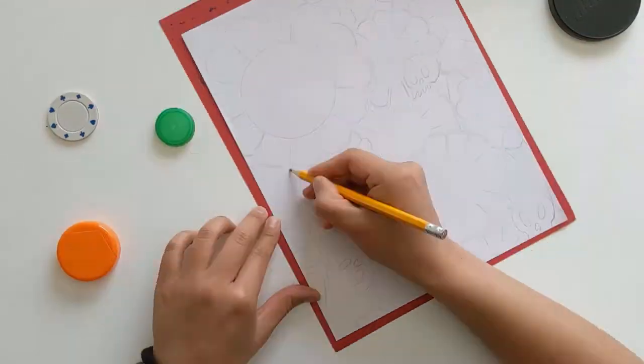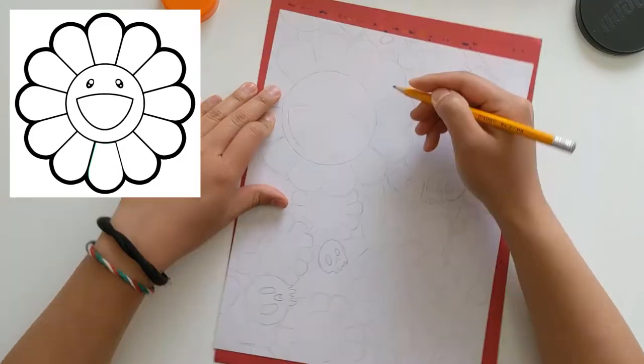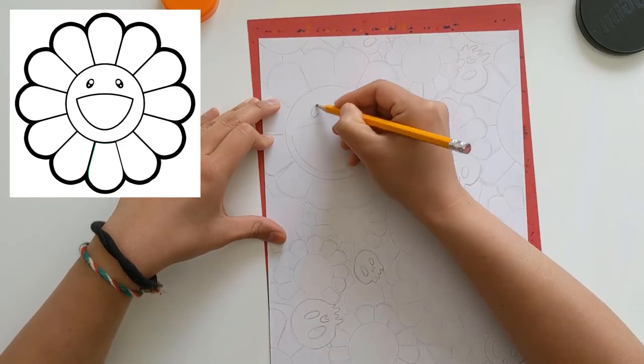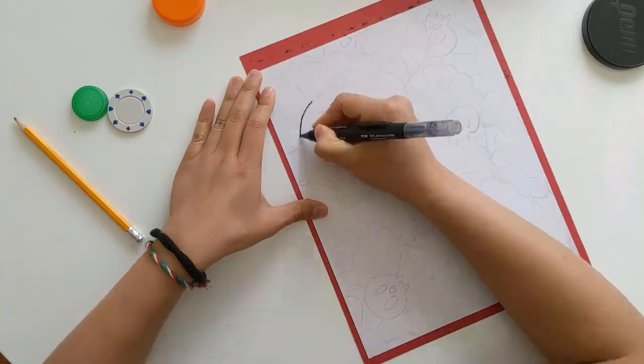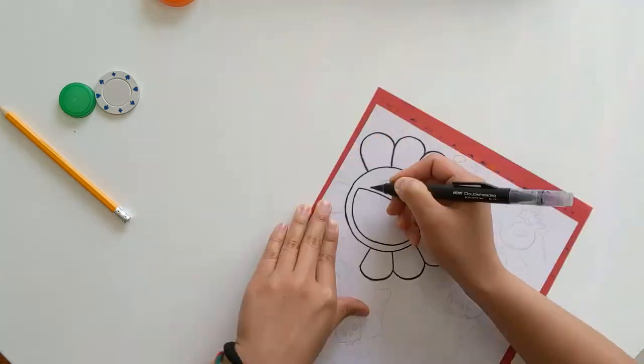Once you have all the flowers and skulls in, finish the flower drawings by adding in the mouth and eyes. Then carefully give it a nice outline with a black marker.